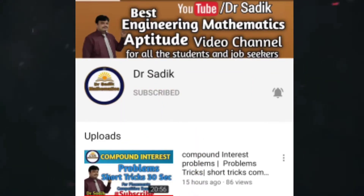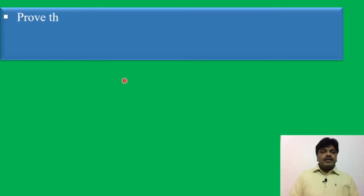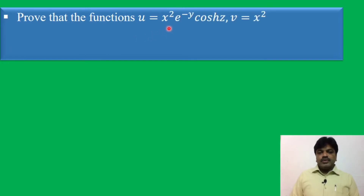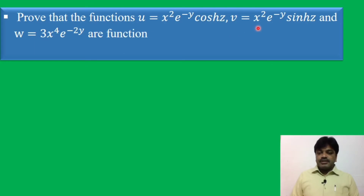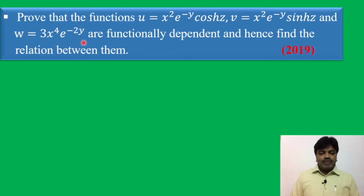Subscribe to Dr. Sadiq Mathematics channel for getting more online videos. Prove that the functions u = x² e^(−y) cosh(z), v = x² e^(−y) sinh(z), and w = 3x⁴ e^(−2y) are functionally dependent, and hence find the relation between them.